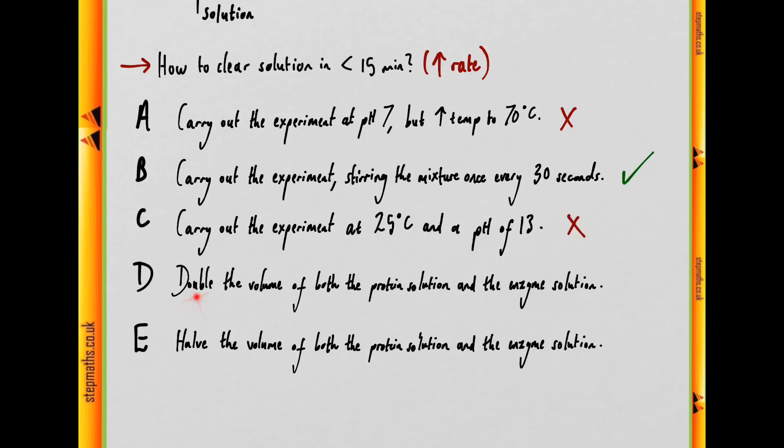Moving on to D, double the volume of both the protein solution and the enzyme solution. Well, that would maintain the relative levels of protein and enzyme, and so it would have no effect. And the same could be said for halving both the protein and the enzyme solutions.